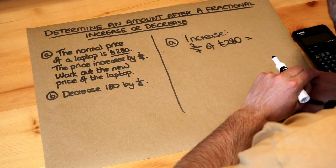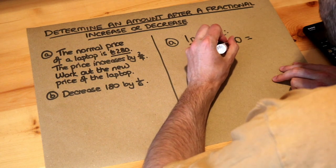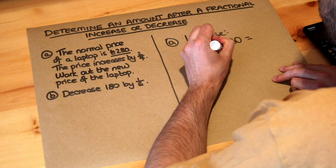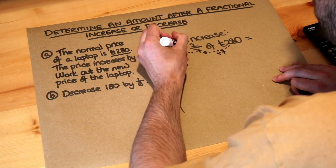Now to find two-sevenths of £280 we know we can divide this number by the denominator, so divided by the seven, and then you times it by the top number, the numerator.